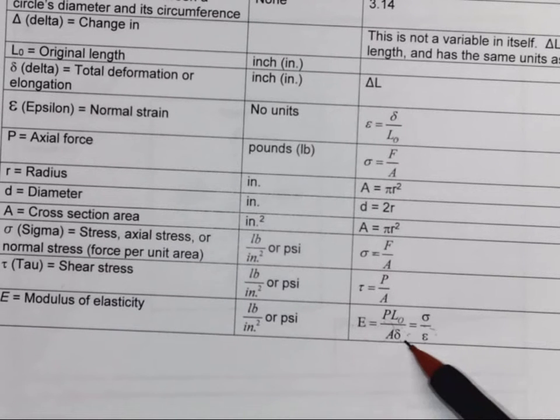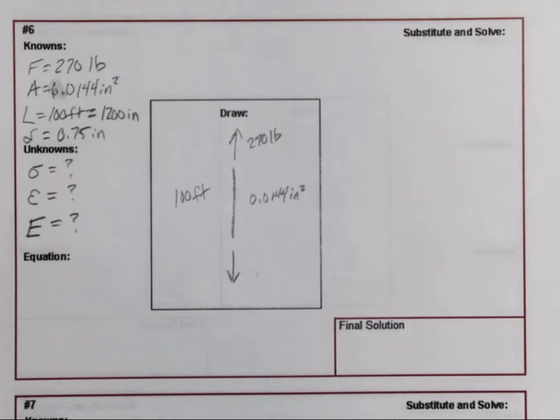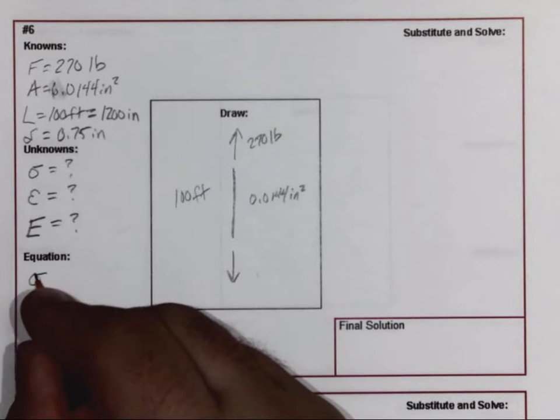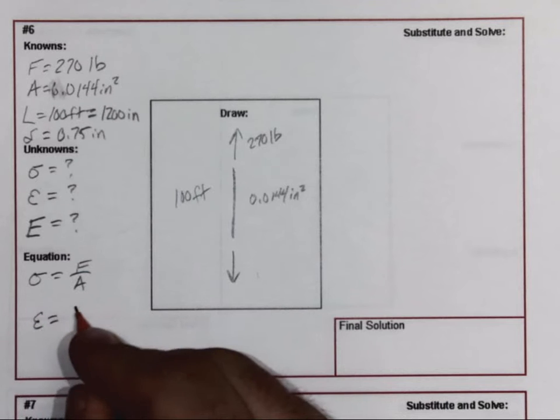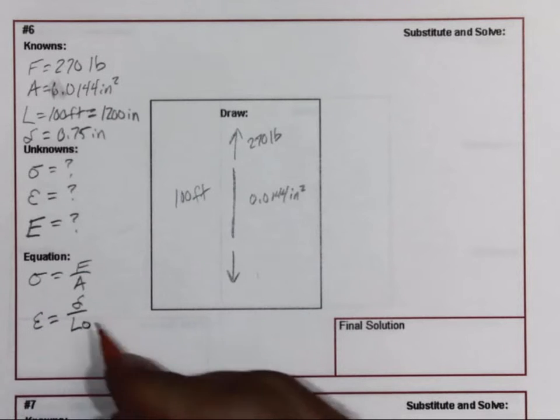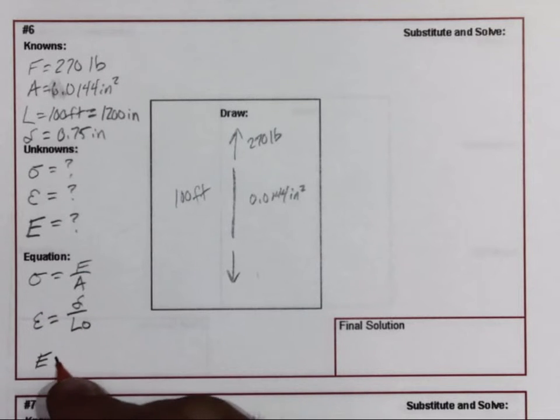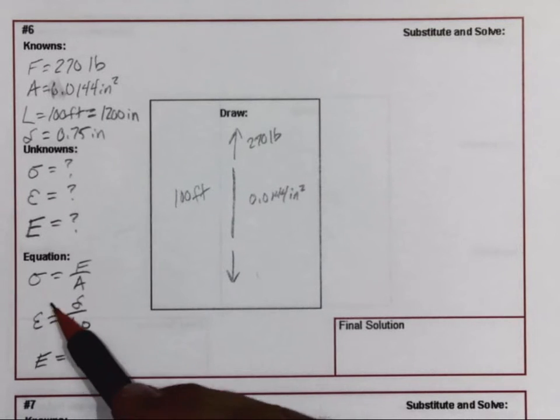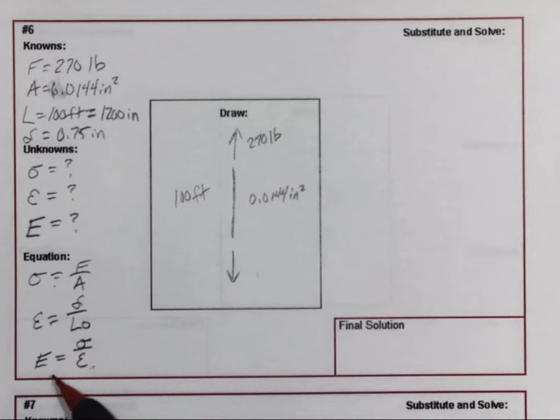So as far as equations, let's go down the line. Stress is force over area. Strain is the amount of stretch over the original length. And then the modulus of elasticity is going to be stress divided by strain. Since we're finding these two, we're going to be able to use those two to find our modulus of elasticity.